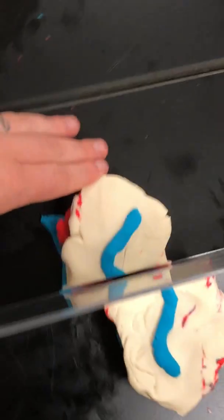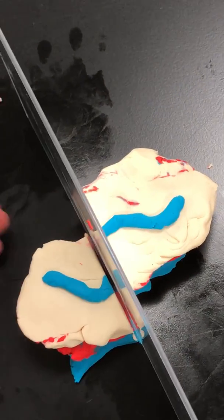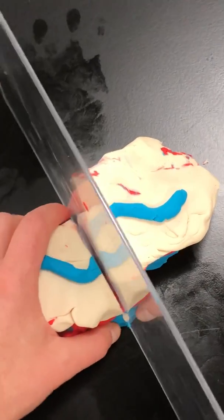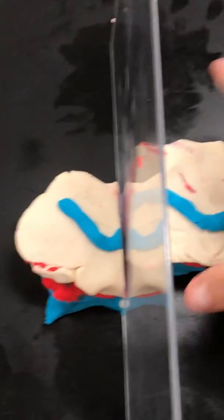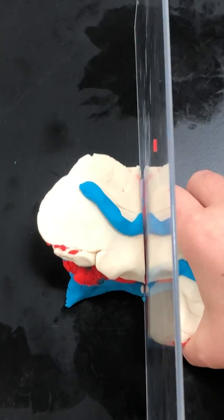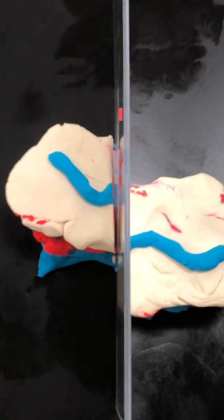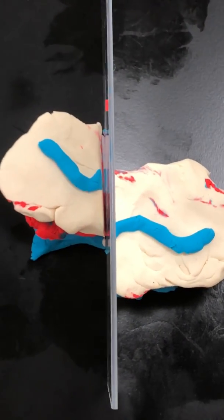So this is how we know that this is a sinistral strike-slip fault—sinistral means move to the left. If it had been the case that this block had moved to the right, that would be a dextral strike-slip fault.